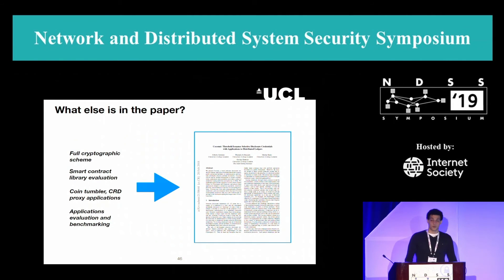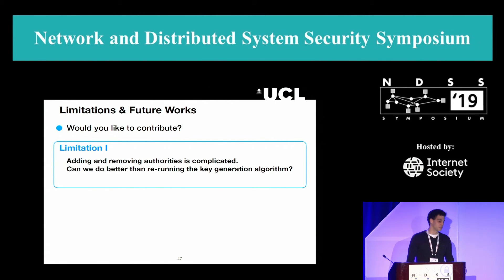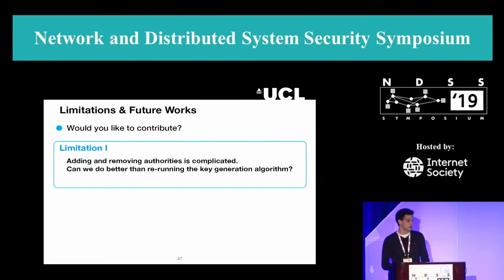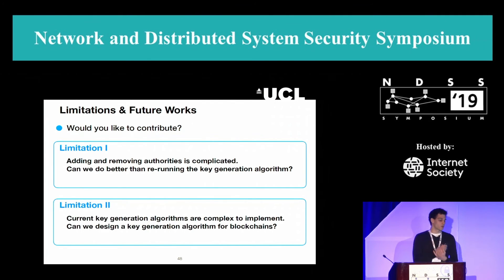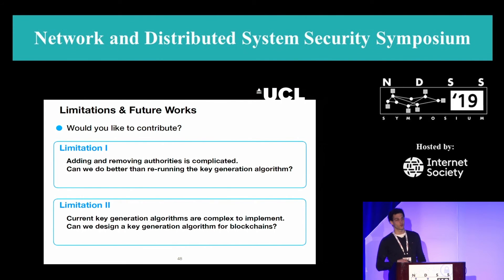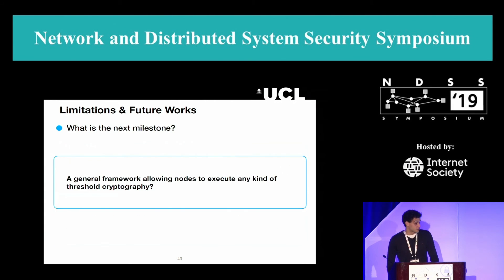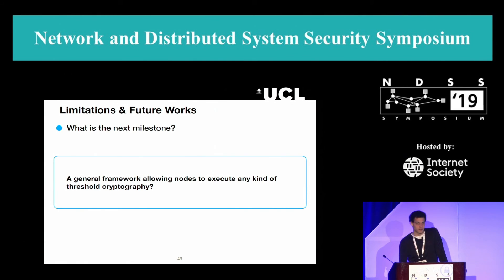You can find additional information in the paper. We have two main limitations. The first is that adding and removing authorities is not easy without re-running key generation — adding is feasible using proactive secret sharing techniques, but removing authorities I wouldn't know how to do without re-running key gen. The second is we are working on a key generation algorithm for threshold cryptography that leverages the high integrity structures of the blockchain for fault tolerance while remaining relatively simple. It seems some people from DFINITY have an answer to limitation two now. The next milestone would be a general framework for any kind of threshold cryptography, but that comes with challenges we currently don't know how to solve.